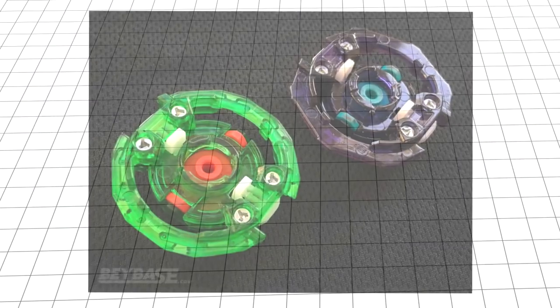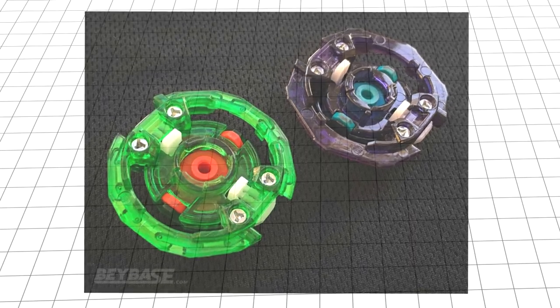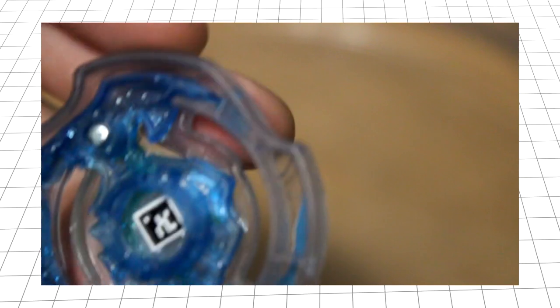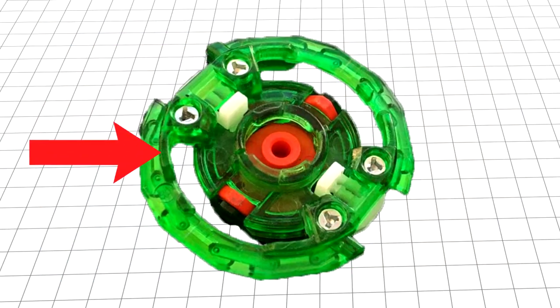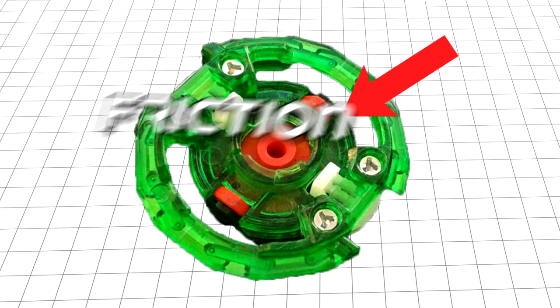Unlike normal cores, they do not have teeth to bite the driver and prevent it from moving. Instead, they use slopes, like Hasbro beys. You'd think that without teeth they would have worse burst resistance but this isn't the case. Thanks to its rubber lock, it prevents the bey from bursting thanks to our old friend, Friction.